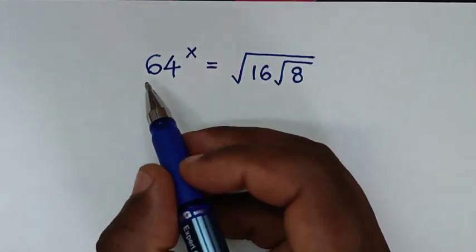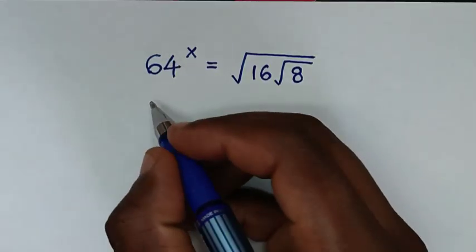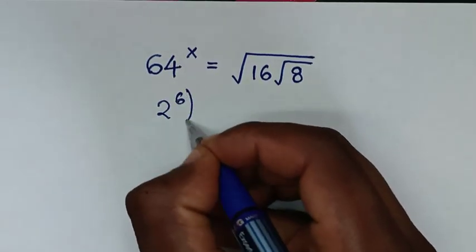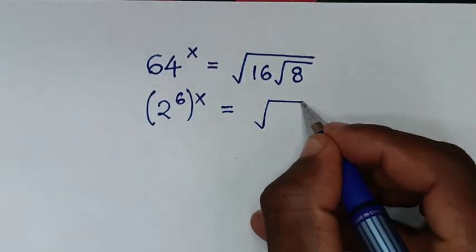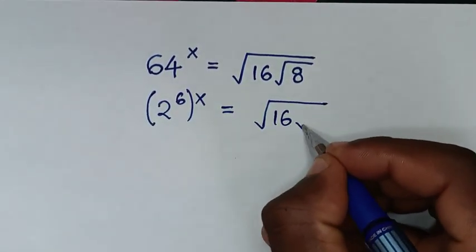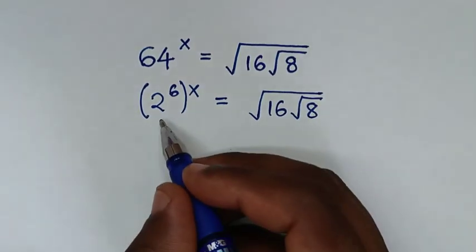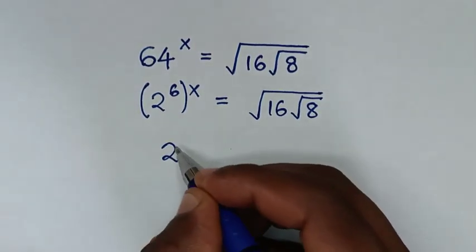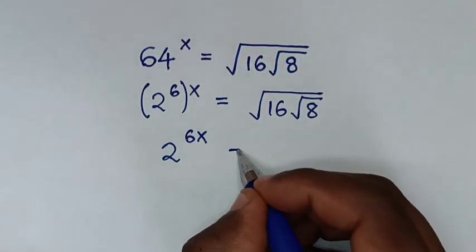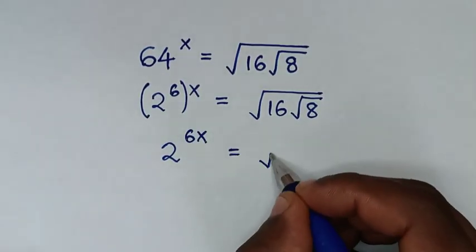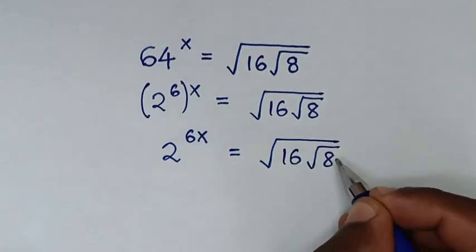In the first step, we convert 64 to a base of 2. 64 is the same as 2 to the power of 6, so the equation becomes (2^6)^x, which is equal to the square root of 16 times the square root of 8.